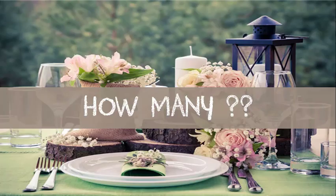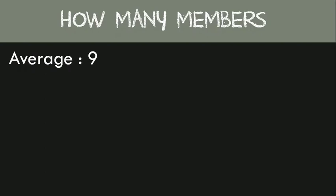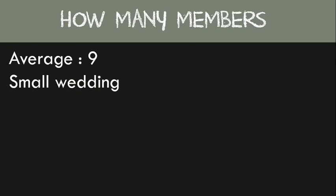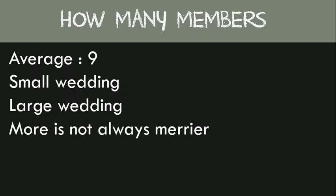Now let's spend a few minutes going over how many people you need. The average wedding has nine bridal party members — whether that be five on the bride's side and four on the groom's, or four on each side and one flower girl. For a smaller wedding with around 50 to 60 guests, you would want no more than six bridal party members. For a large wedding of say 150, you could go up to 12 max.